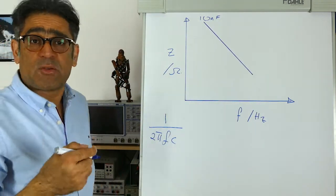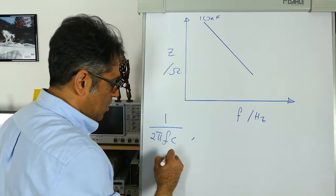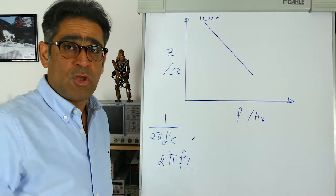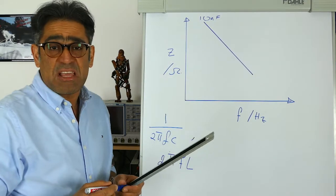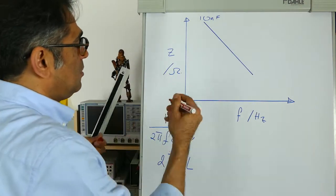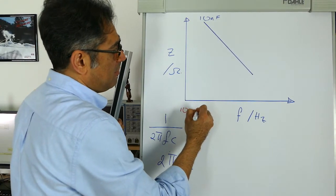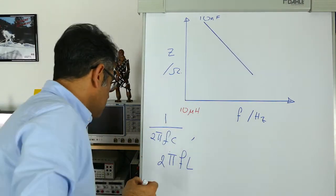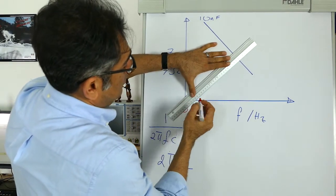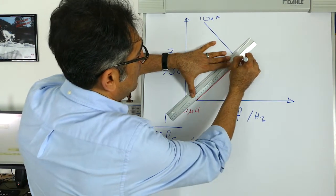We also know that in our filter we're going to have an inductor, and we know that the impedance of the inductor is 2πFL. For simplicity, let us say that we now have a 10 microhenry inductor. If I plot the impedance of the inductor as a function of frequency, it will go up like so.